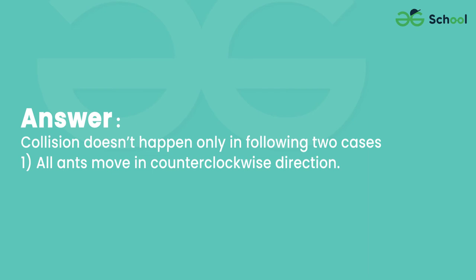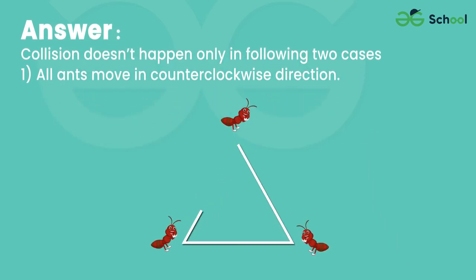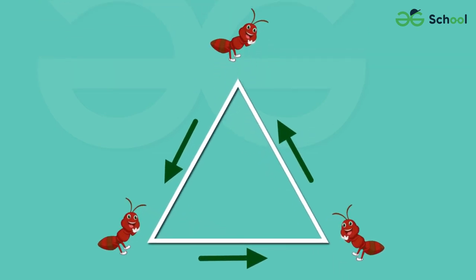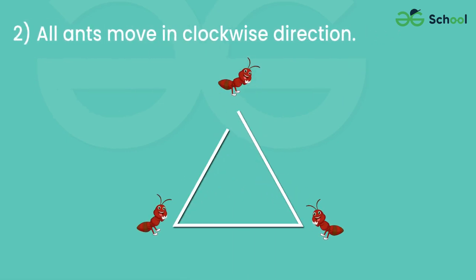Collision doesn't happen only in the following 2 cases: 1. All ants move in the counter-clockwise direction. 2. All ants move in the clockwise direction.